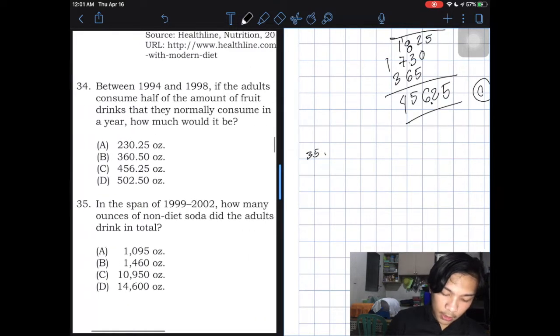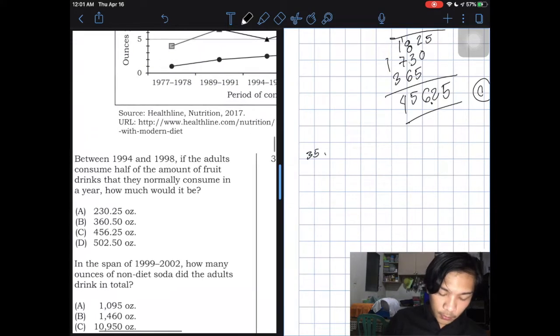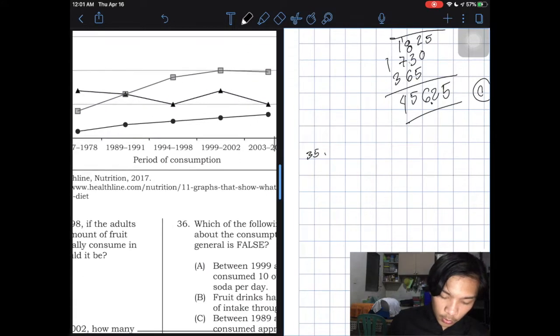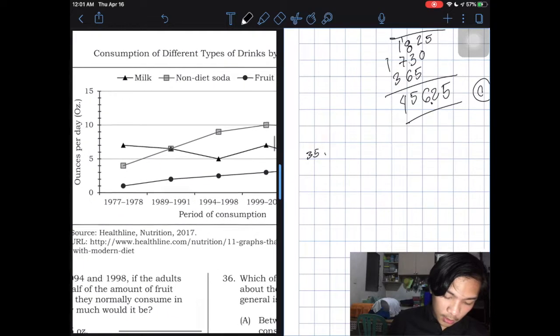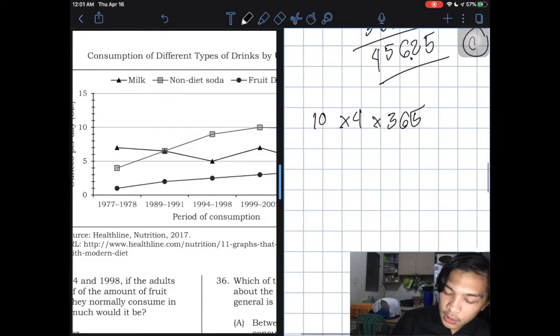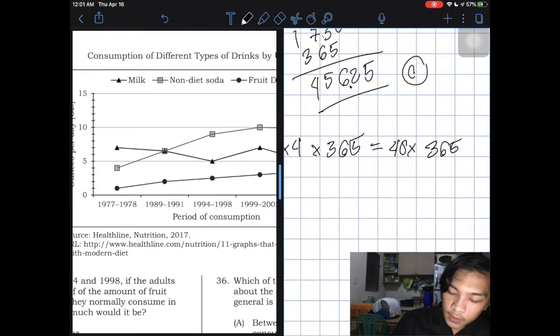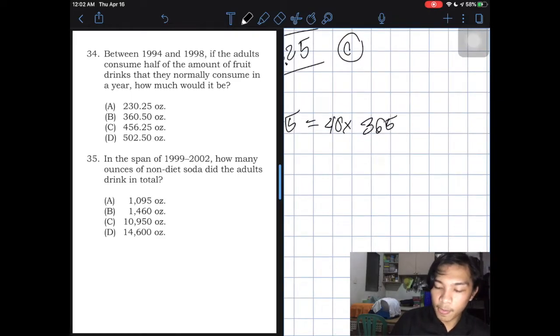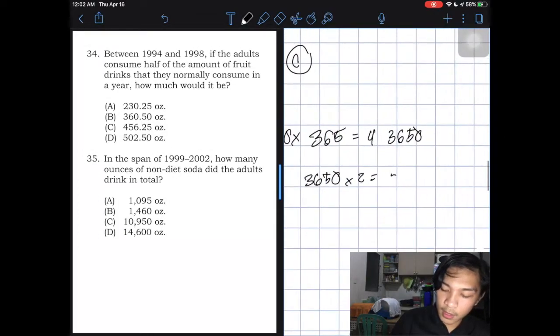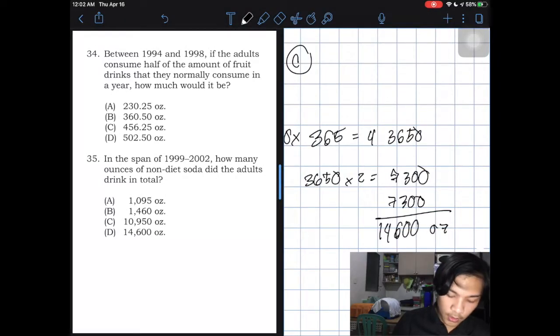Number 35. In the span of 1999 to 2002, how many ounce of non-diet soda did the adults drink in total? So for the whole span of 1999 to 2002. The question here is non-diet soda. You can see here is 10. So 10 times 4 times 365. This is 40. 40 times 365. It's just like 4 times 3,650. 3,650 times 2. Double this is 7,300. So plus 7,300. This is 14,600 ounce. This is letter D.